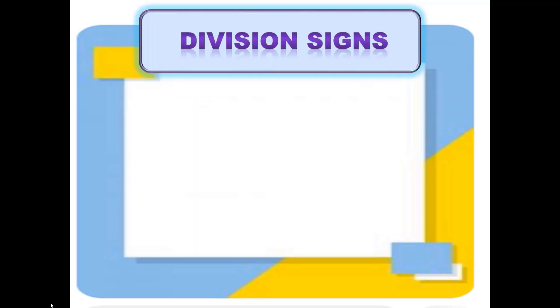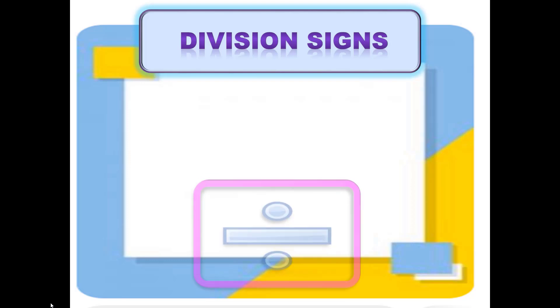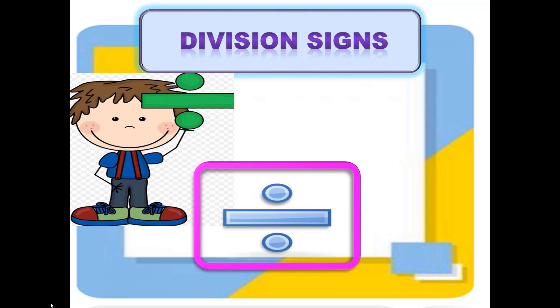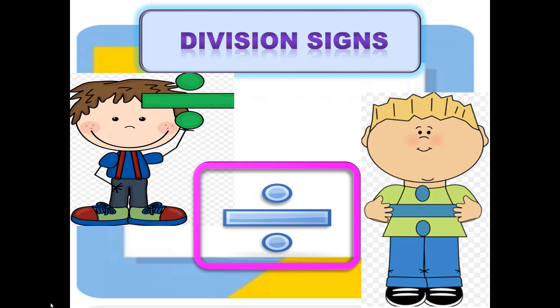Division کے لئے ہم دو طرح کی signs use کرتے ہیں۔ ایک یہ sign ہے — یہ ایک horizontal line ہے جس کے اوپر 1 dot اور نیچے 1 dot ہے۔ جہاں پہ بھی آپ یہ sign دیکھیں گے وہ question division کا ہوگا۔ اس boy نے بھی division کا sign پکڑا ہوا ہے — یہ sign اچھے سے memorize کر لیں تاکہ بھولے نہ۔